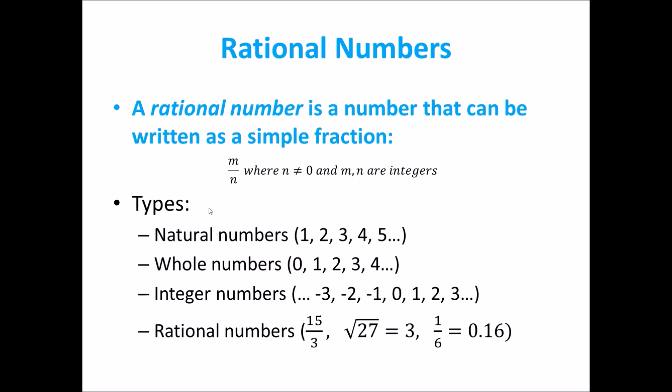There are a couple different types of rational numbers like the diagram we saw before: natural numbers or counting numbers 1, 2, 3, 4, 5, etc.; whole numbers 0, 1, 2, 3, 4, etc.; integer numbers which are positives and negatives including 0 as well; and rational numbers like the examples 15 over 3, the square root of 27, or 1 sixth.